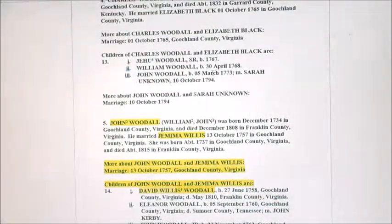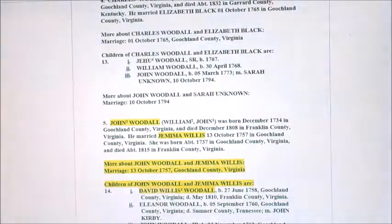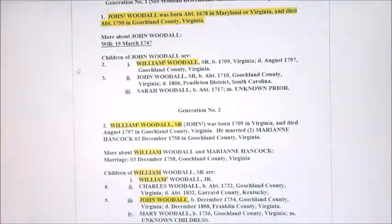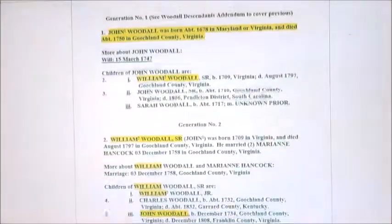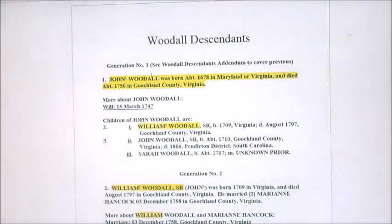It keeps scrolling upward. John Woodall is number 3, generation number 3. If you look to the right of his name, it shows 'William 2' and 'John 1' as his parents. So I'm looking for William — William 2 Woodall, generation number 2, at the very top of this document now. Son of John 1, he was born 1709 in Virginia. And at the very top, John 1 Woodall, born 1678, is his dad.